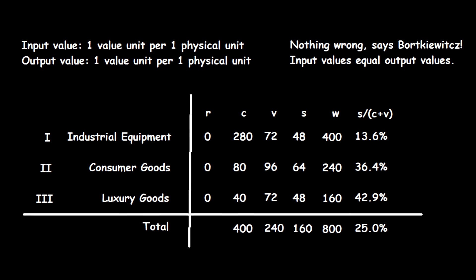We will have an economy where one industry produces constant capital, one industry produces variable capital, and one industry produces luxury goods. We have simple reproduction. Inputs being valued differently from outputs would break simple reproduction, justifying simultaneism in Bortkiewicz's view.